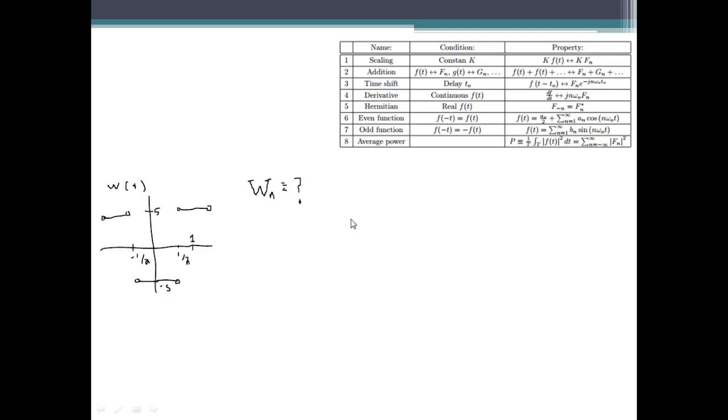So we can say that w of t equals 5 times g of t minus 1 half. The minus 1 half just comes from shifting it over to the right by 1 half and the 5 is just that constant factor that we're scaling it by.